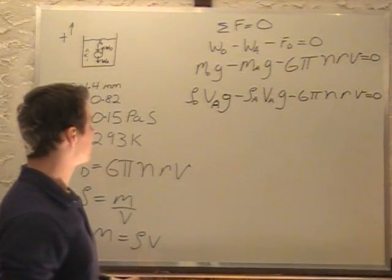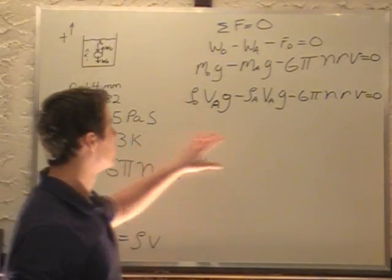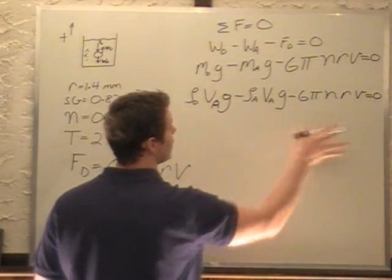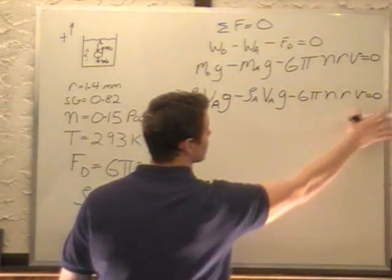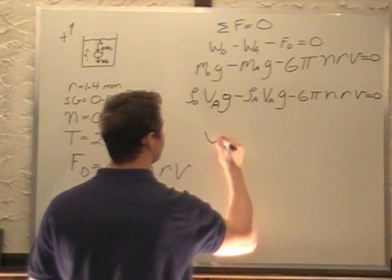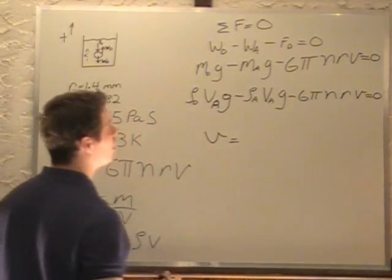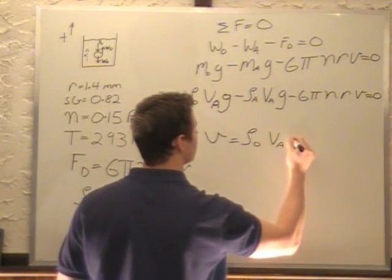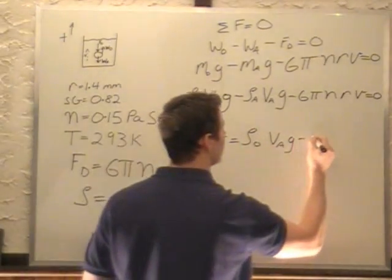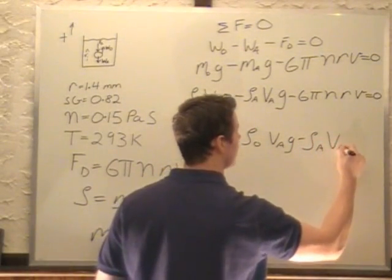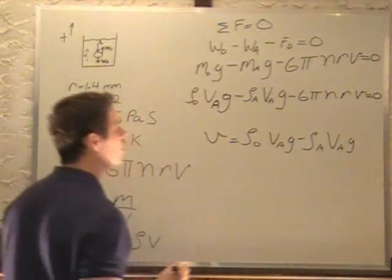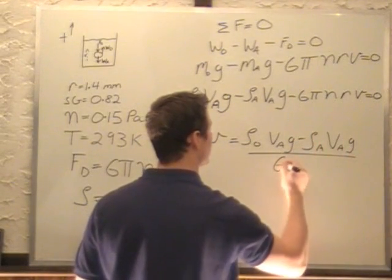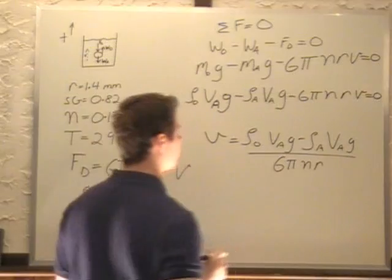So the next thing to do is let's just solve for V here. I'll add this to the other side so it's positive. We're going to have V equals, so we're left with ρ of oil Vag minus ρ of air Vag divided by 6πηr.